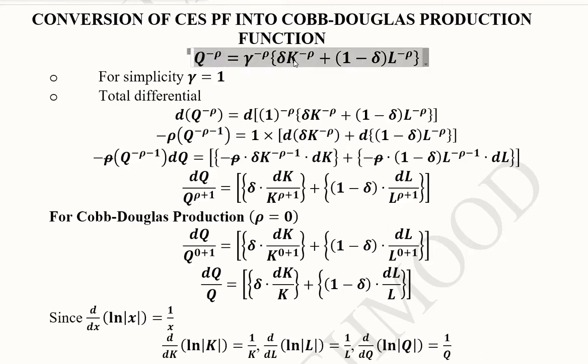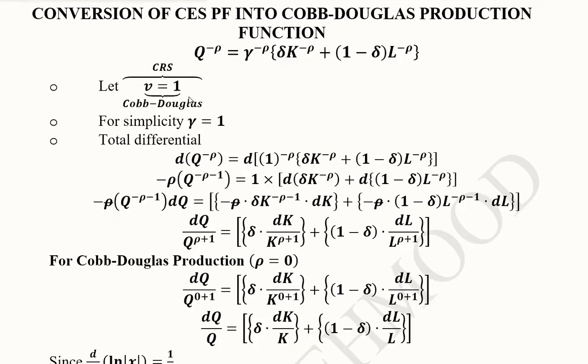We are resorting to one of the simplified versions where V is equal to 1 so that we are assuming that CRS prevails. Now it is more convenient because when V is equal to 1, it is the case of CRS and that holds true for Cobb-Douglas production function. So we can't see V here because it is reduced to 1.